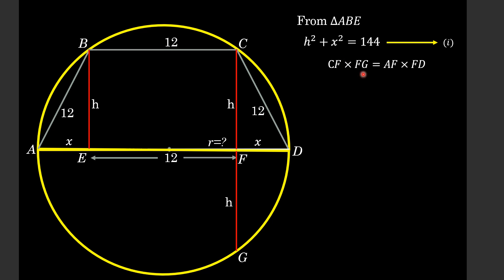CF is also h and FG is also h. Then we can write it as h² is equal to AF which is equal to AE + EF.